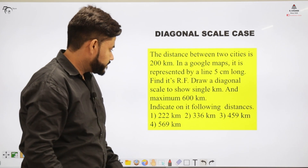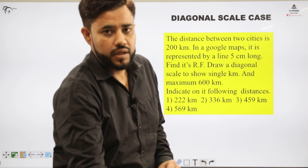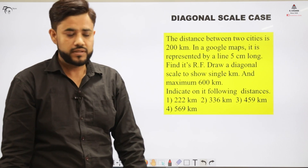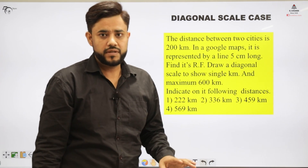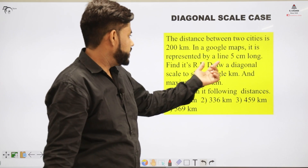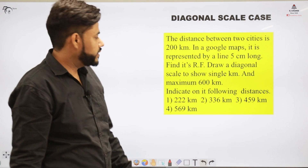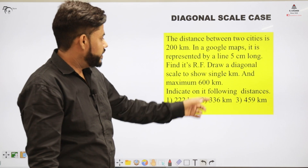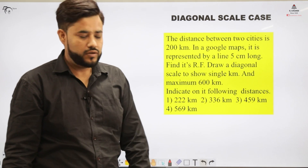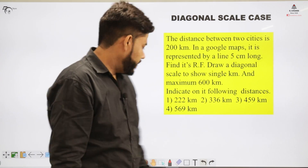To explain the diagonal scale, I've taken a live example from Google Maps. In that situation, the distance between two cities is mentioned as 200 kilometers, and on Google Maps it is represented by a line which is 5 centimeters long. The question asks: find the RF, draw the diagonal scale that represents kilometers, give the scale at a maximum of 600 kilometers, and indicate the given distances on the map.